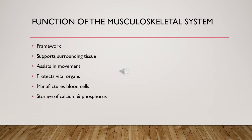Our musculoskeletal system has several functions: it provides the framework for our body, supports surrounding tissues, assists in movement, and protects vital organs. Our ribs and sternum encapsulate our lungs and heart, and our cranium protects our brain. The musculoskeletal system also manufactures blood cells — an important part of overall health — and stores calcium and phosphorus in particular.